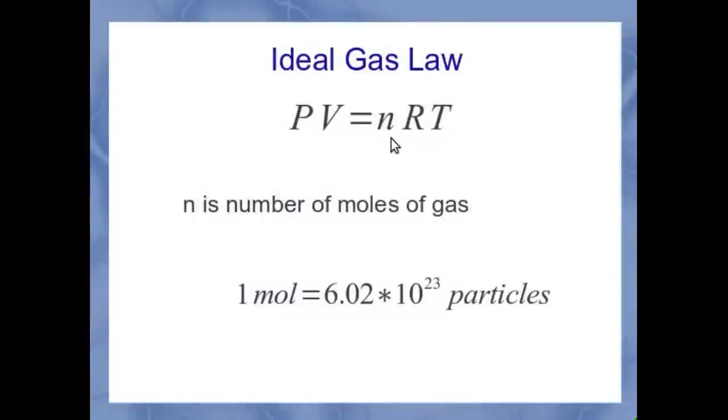Then we get to n. And n in our equation is the number of moles of gas. Now a mole is kind of like a dozen. It's a set number. A dozen is 12. A mole happens to be this very large number, 6.02 times 10 to the 23rd particles. And this particular number is sometimes called Avogadro's number.